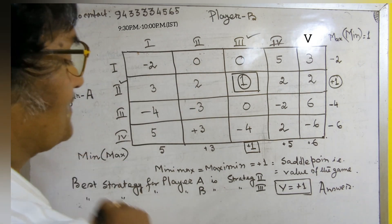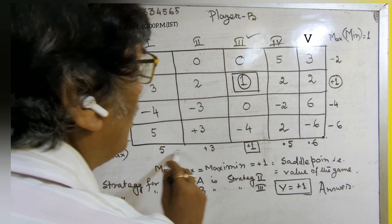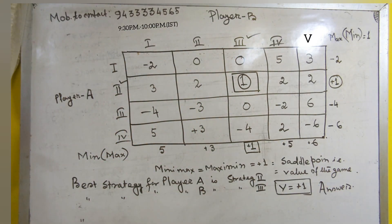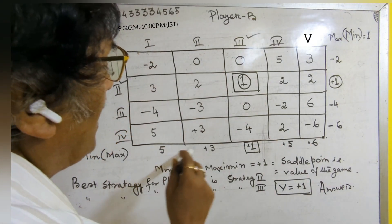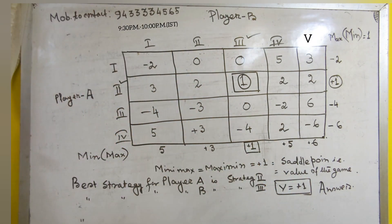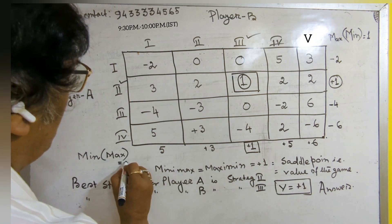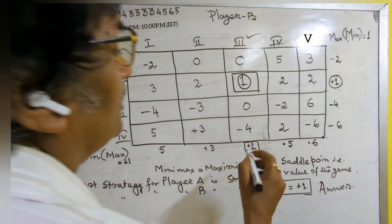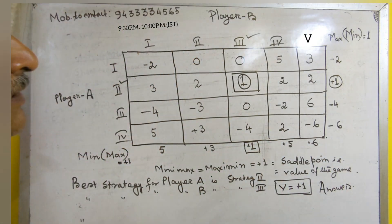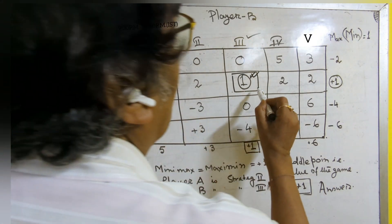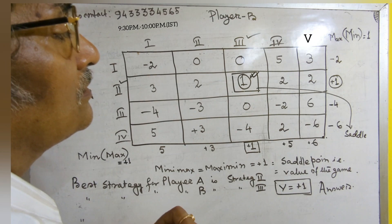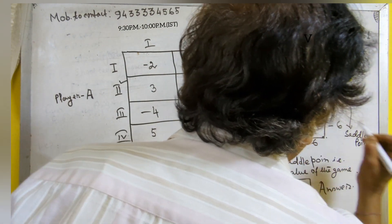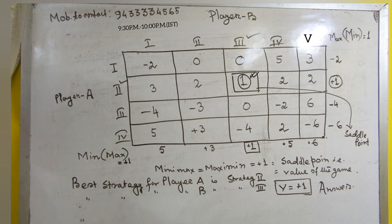Now you have to find the minimax. Minimax means the minimum value of all these maximum values. Out of 5, 3, plus 1, 5, 6 — the minimum value is plus 1. That is why minimax is equal to plus 1. Now see — the minimax and maximin values are the same, and they coincide at one place, which is called the saddle point, or you can say the equilibrium point, which is the value of the game. In this case, the value of the game is plus 1.